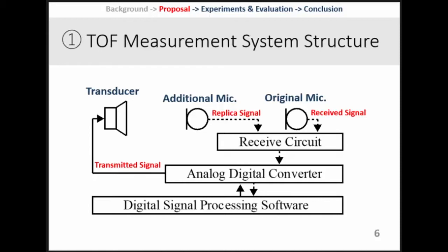The first proposal is about cross-correlation technique. To measure the ultrasonic TOF, the existing method cross-correlates the transmitted signal with the received signal. In our proposed method, we use an additional microphone. We call the signal received from this additional microphone the replica signal. We cross-correlate the replica signal with the received signal. By doing this, we can get more accurate ultrasonic TOF than using the existing method.